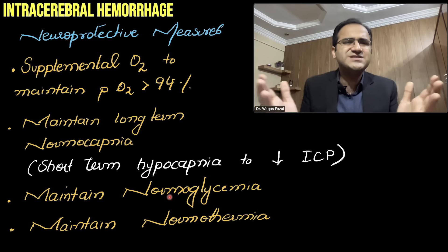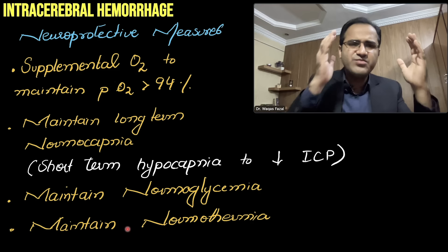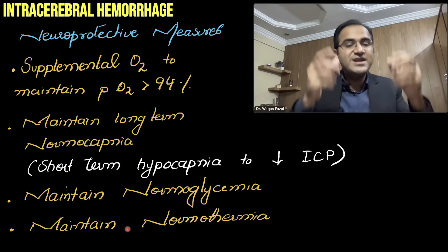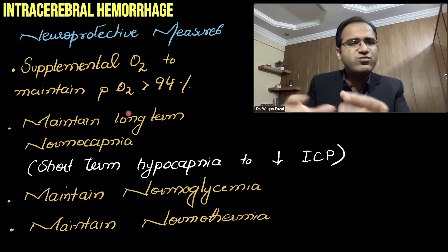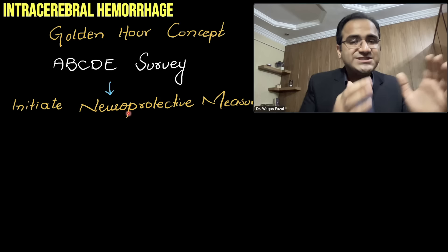Maintain normothermia as well. Because the brain is damaged, the normal thermostat in the brain can be injured, resulting in neurogenic fevers where the brain maintains higher body temperatures. These neuroprotective measures — airway protection, oxygen, CO₂ control, normoglycemia, normothermia — are even more important than diagnostic measures and should be initiated before going for investigations.